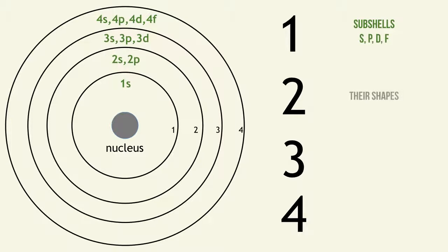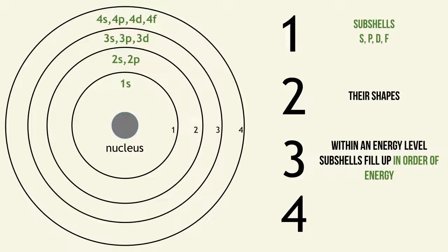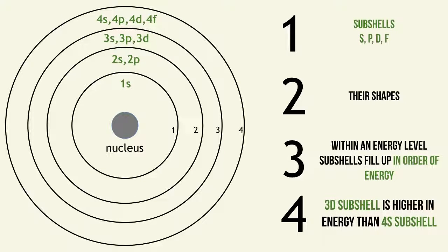Let's quickly recap the video. The subshells that can exist within the atom are S, P, D, and F, and they are ranked in order of increasing energy. Within each energy level, subshells fill up in order of energy — S first, then P, then D, then F. Most importantly, remember that the 3D subshell is higher in energy than the 4S subshell, so you must fill 4S before 3D.